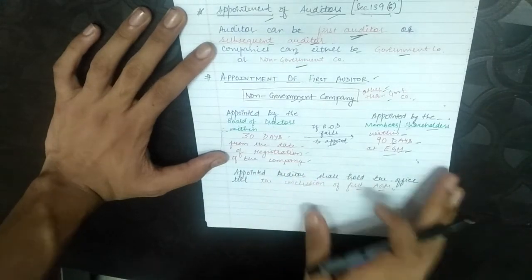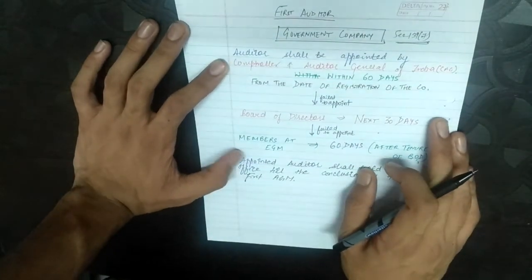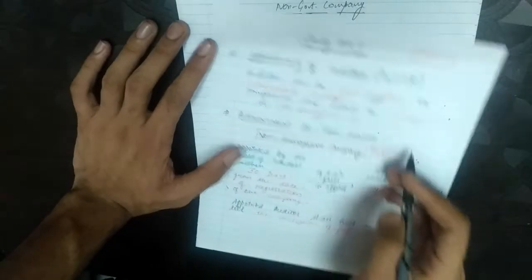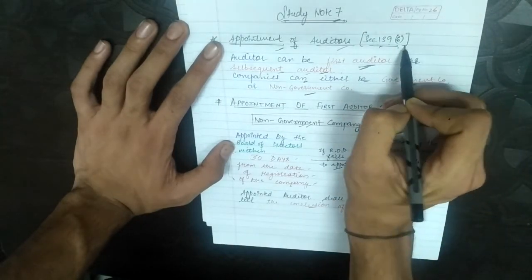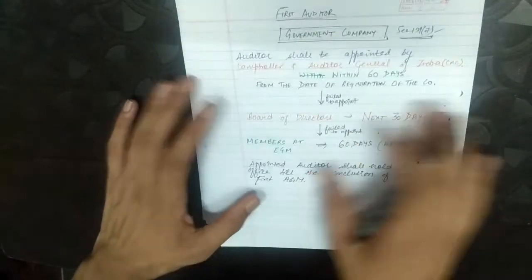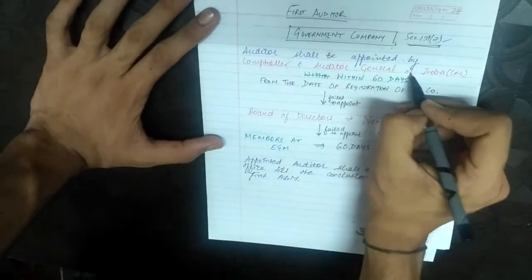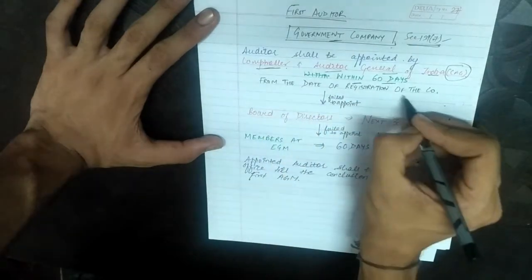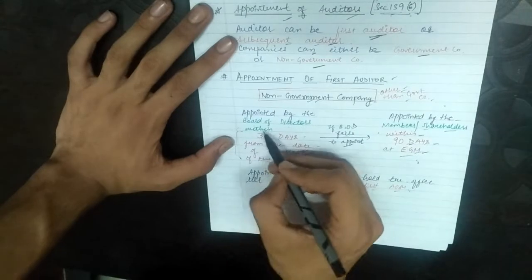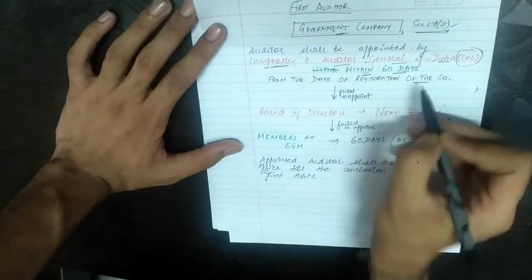Now, appointment of the first auditor in case of a government company — Section 139 subsection 7. In the case of a government company, the auditor shall be appointed by the Comptroller and Auditor General of India (CAG) within 60 days from the date of registration of the company.